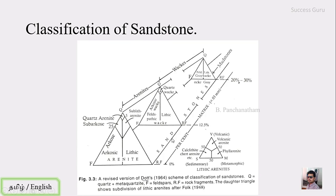This classification is for matrix percentage of 12.5 to 20. If the matrix percentage is between 20 to 30 percentage, then we use the term graywacke. If it is quartz dominant, it is called quartz graywacke. If it is feldspar dominant, it is called feldspar graywacke. If it is rock-fragment dominant, it is called lithic graywacke.